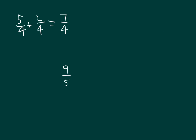Five-fourths plus two-fourths does equal seven-fourths. Can we rewrite seven-fourths as a mixed number? Seven-fourths — we can break that apart into its wholes, which would be four-fourths. And how many more fourths equal seven-fourths? Three-fourths. So seven-fourths does equal one and three-fourths.